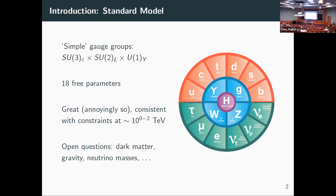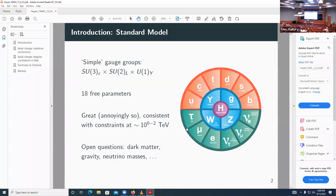There are still some open questions, and they're fairly trivial to ask: what's dark matter? How do we get gravity in the picture? What about neutrino masses? You could say that canonically, the fact that neutrinos have mass is already a beyond-standard-model effect. But clearly there are some things that need sorting out.